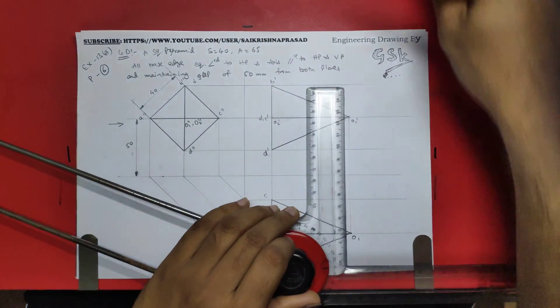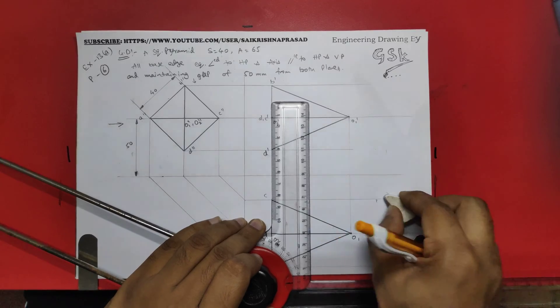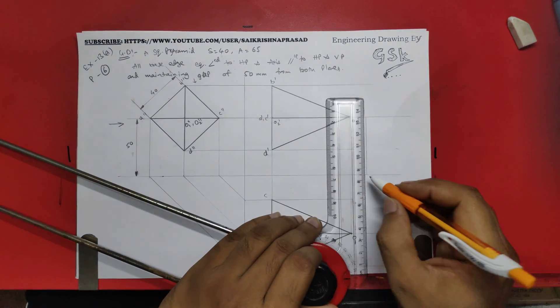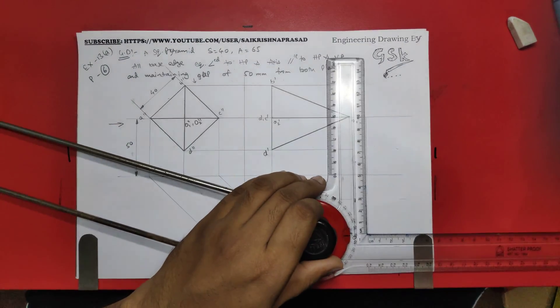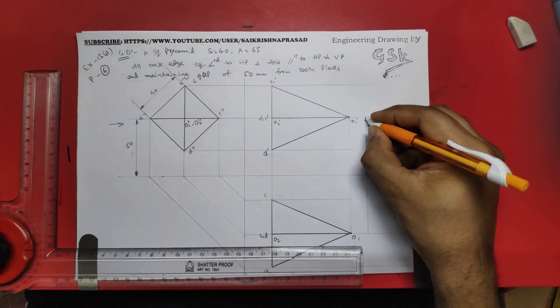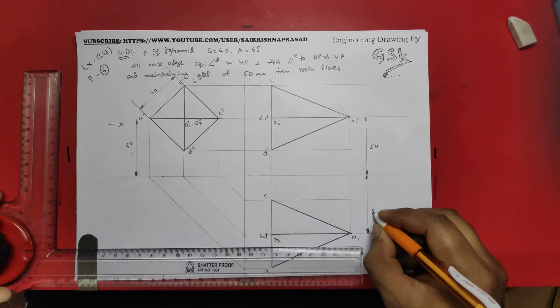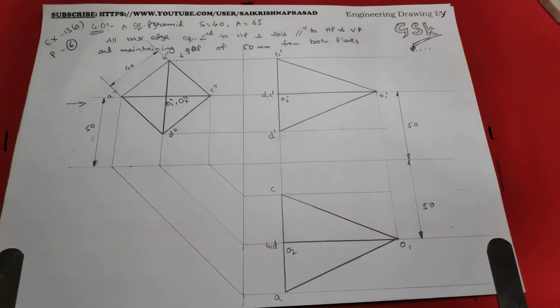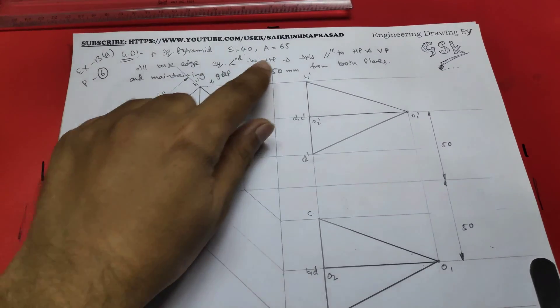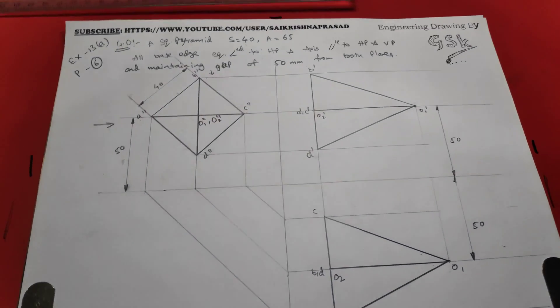50mm from HP and 50mm from the VP. Here you can see the dimensions, that is exact 50mm, exact 50mm, 50mm, 50mm. So by this we have finished the problem, square pyramid in this situation and maintaining all the conditions or criteria given from the question. And I think you understand this problem.